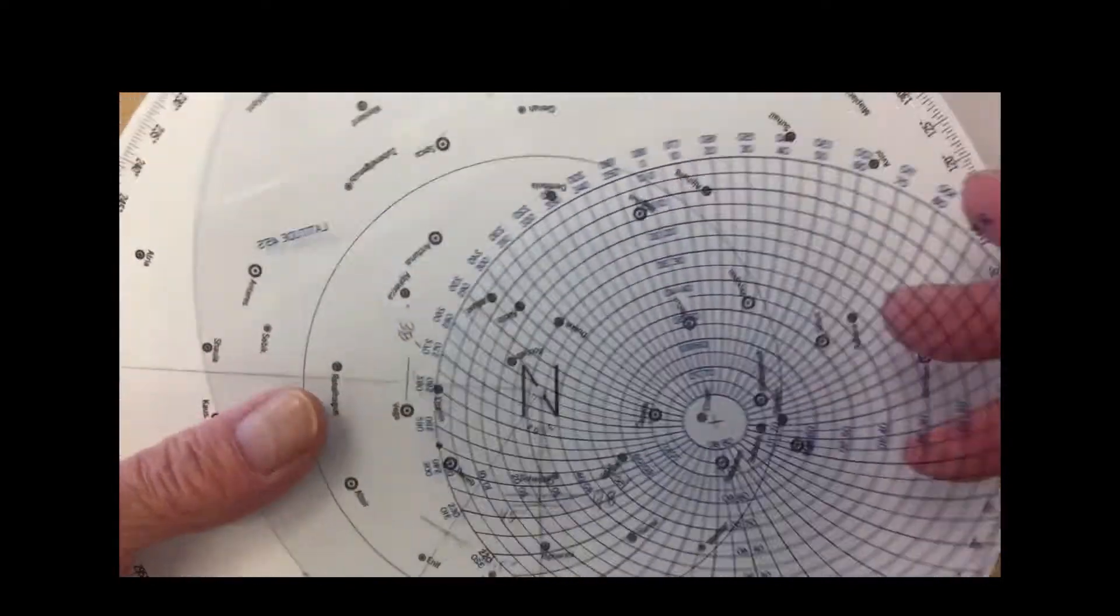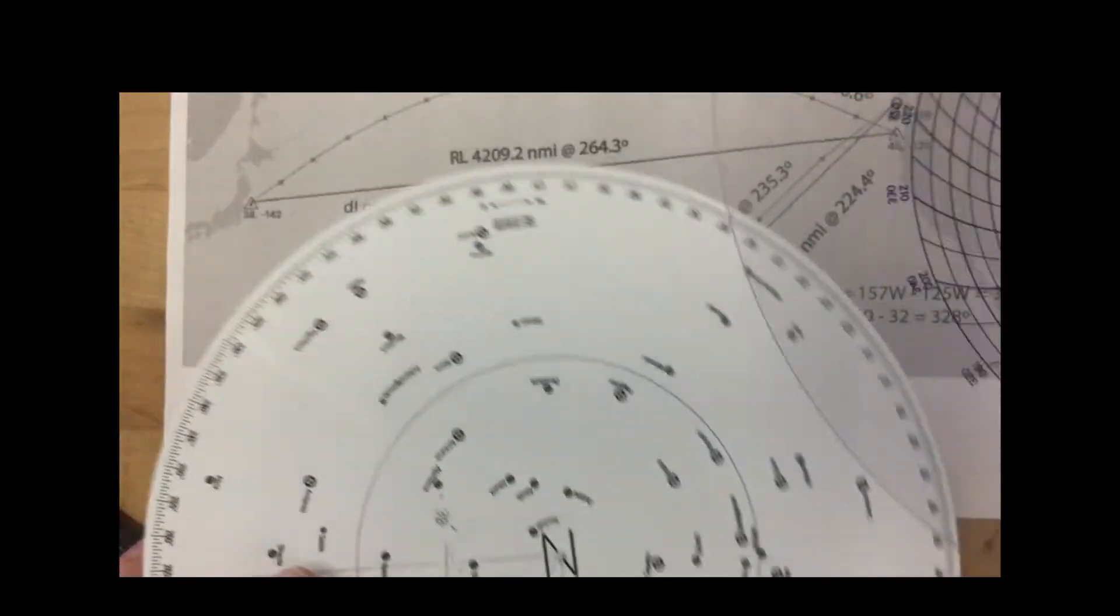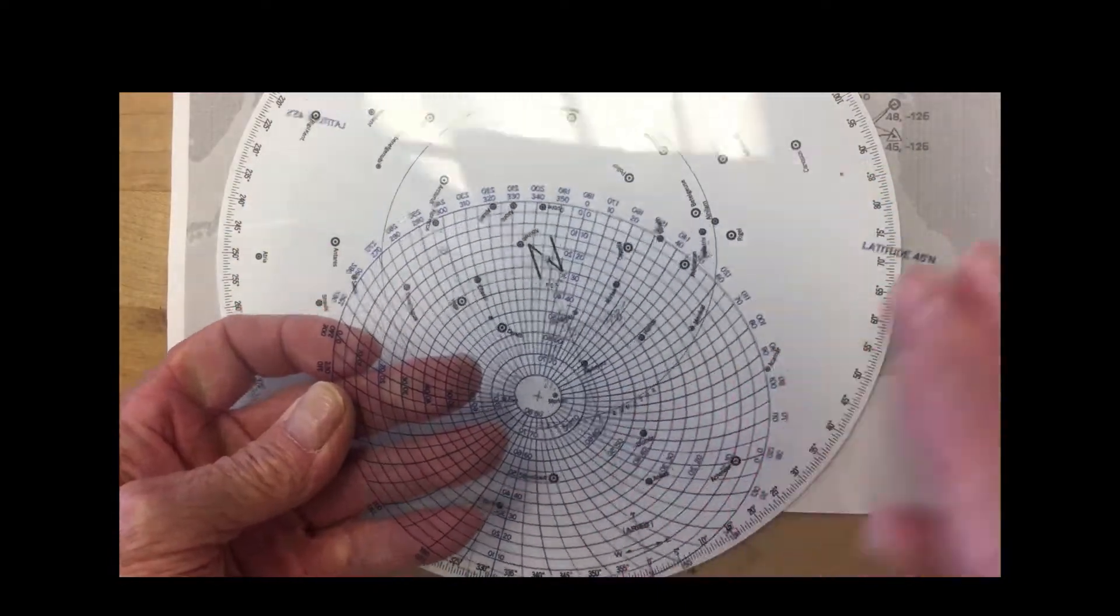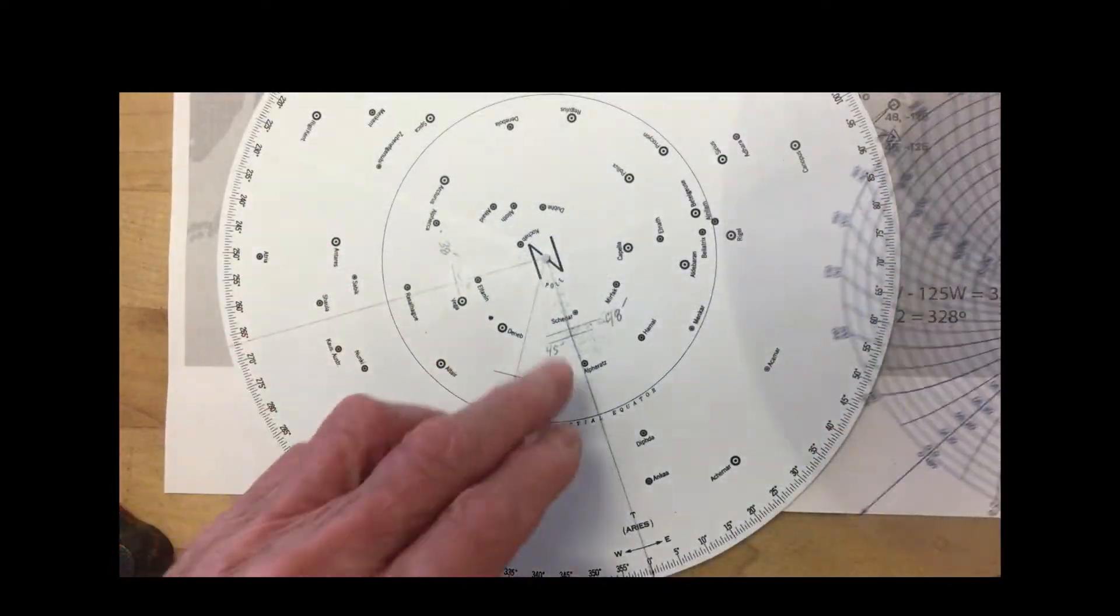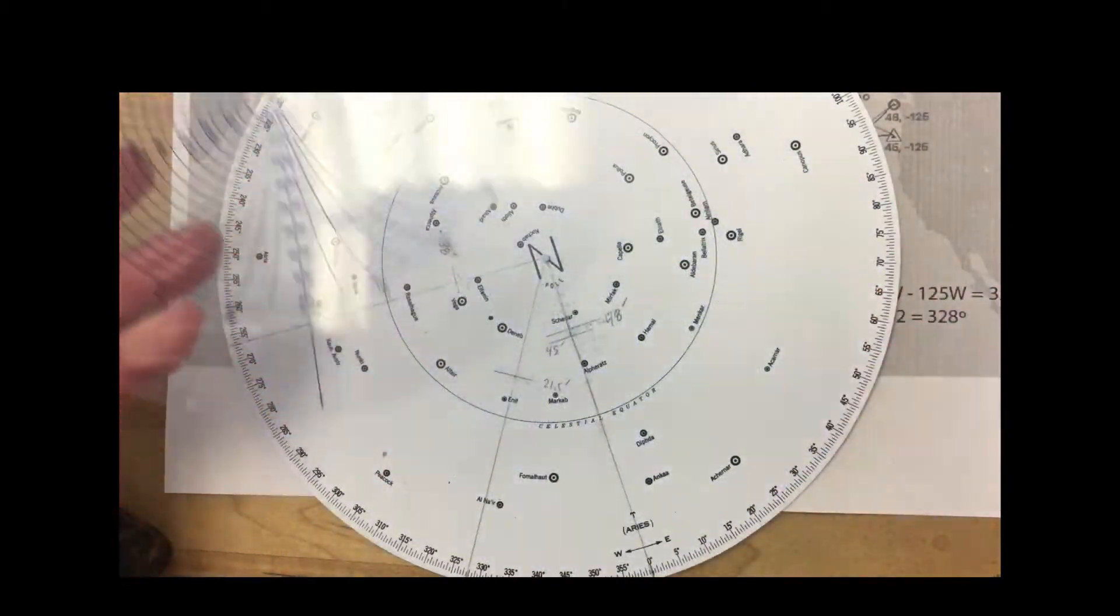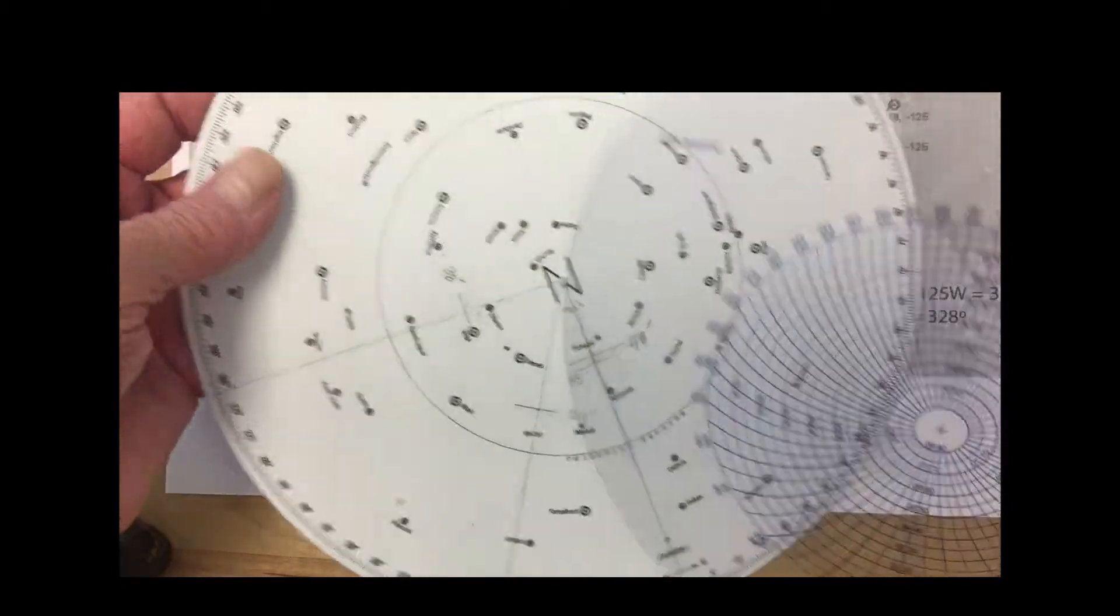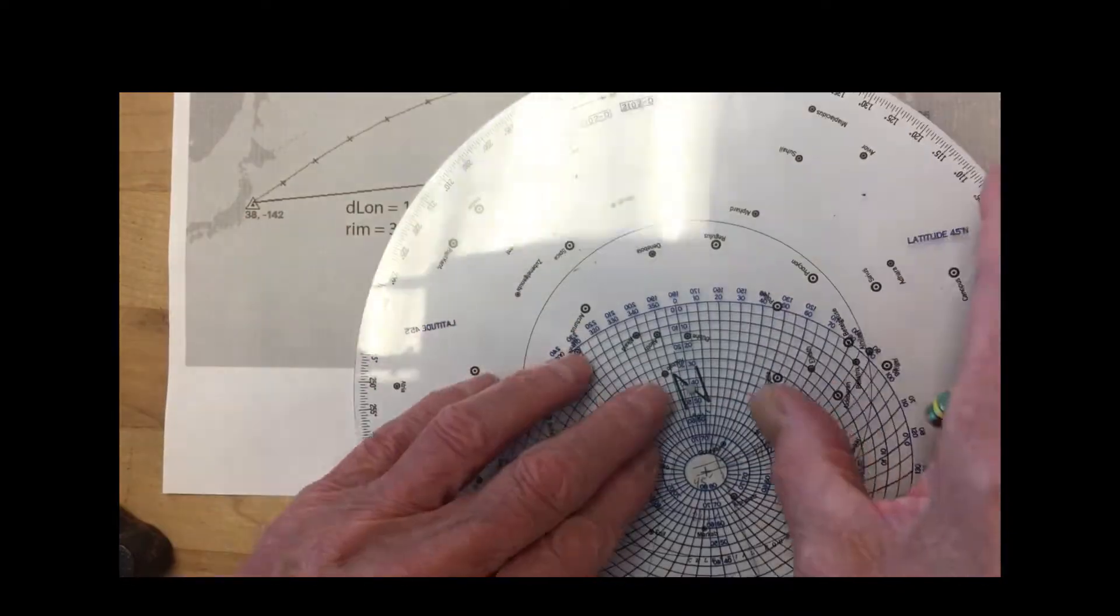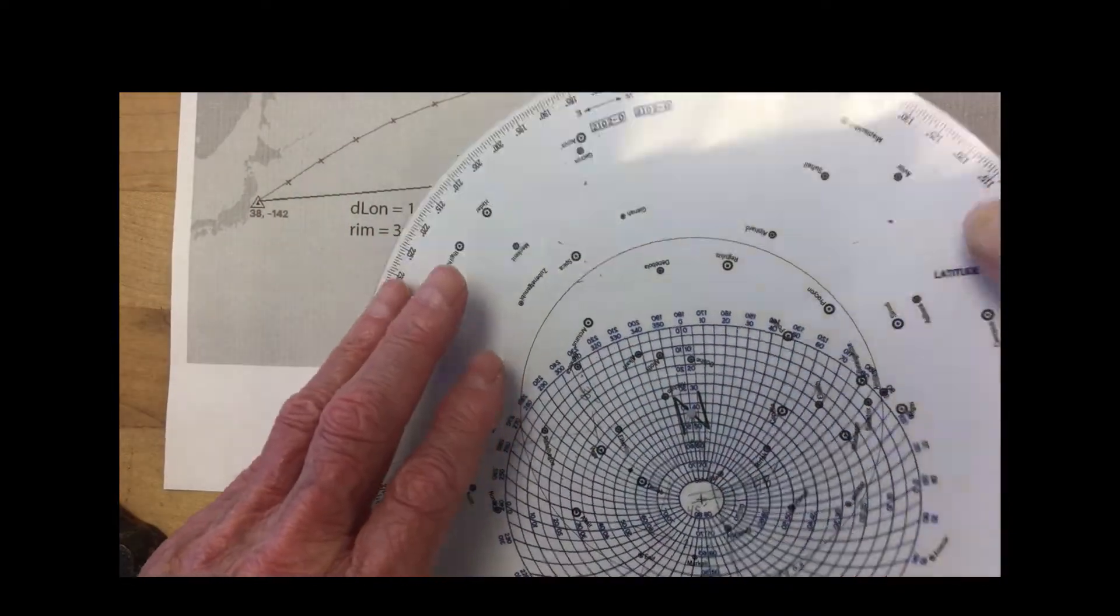Now, the next step you do is you take one of the blue templates that's the closest one to your latitude of departure. In this case, the first example we did right on 45, so we can just go ahead and put this guy right in the hole like this.